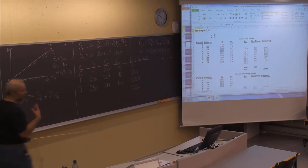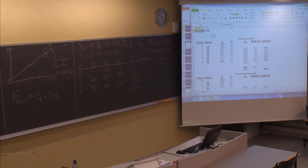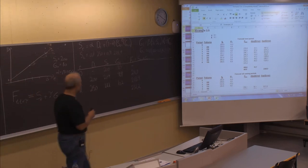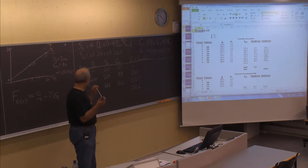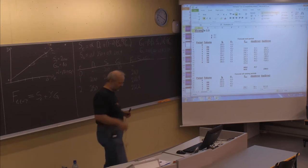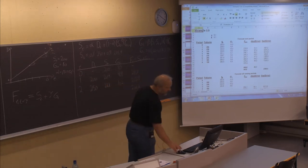If you want to make a forecast for even further periods ahead, you multiply by the tau value, which describes the number of periods in advance — how many periods you want to forecast from the current date.